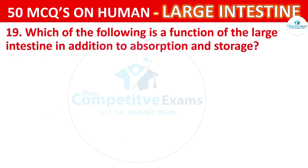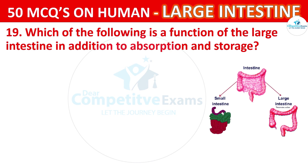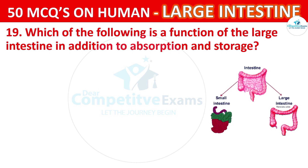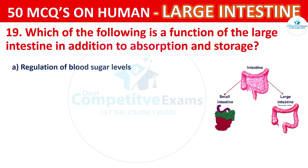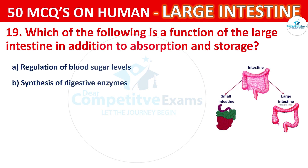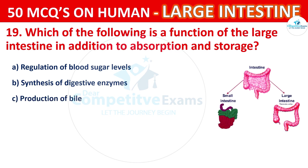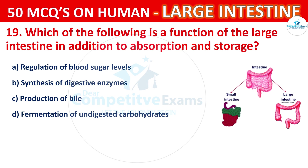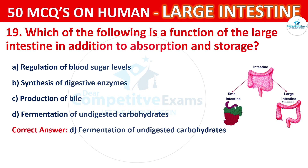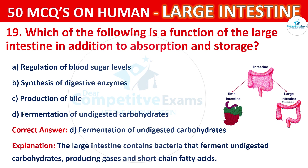Question number 19. Which of the following is a function of the large intestine in addition to absorption and storage? The options are: Regulation of blood sugar levels, Synthesis of digestive enzymes, Production of bile, or Fermentation of undigested carbohydrates. The correct answer is D, that is Fermentation of undigested carbohydrates. The large intestine contains bacteria that ferment undigested carbohydrates, producing gases and short-chain fatty acids.